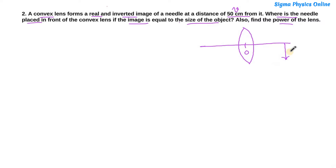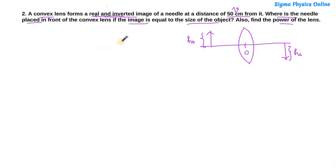The object is on the left-hand side. The height of the object is a positive quantity because it lies above the principal axis, whereas the height of the image is a negative quantity because it lies below the principal axis — since the image is real and inverted.